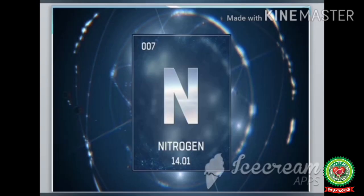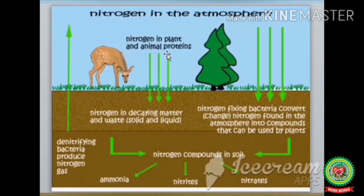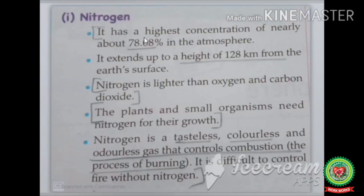Nitrogen is a tasteless, colorless, and odorless gas. Plants and small organisms need nitrogen for their growth. Atmospheric nitrogen is converted into nitrogen compounds by nitrogen-fixing bacteria present in the soil. Plants cannot use nitrogen directly; they absorb nitrogen compounds and convert them into proteins. Animals take these proteins by eating plants or other animals. Nitrogen is also used to make fertilizers and in food packaging factories. Nitrogen has the highest concentration of nearly 78.08% in the atmosphere and extends up to a height of 128 km from the earth's surface.